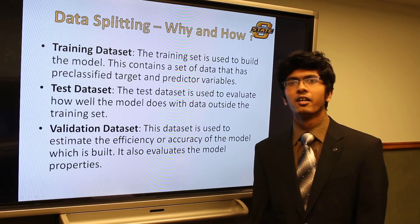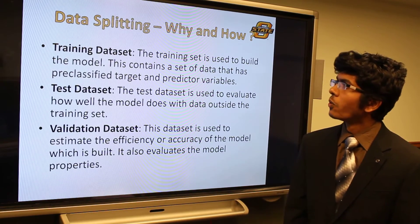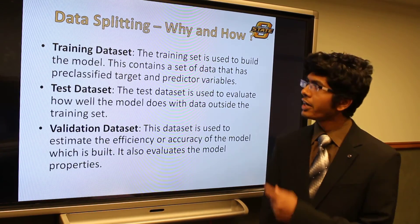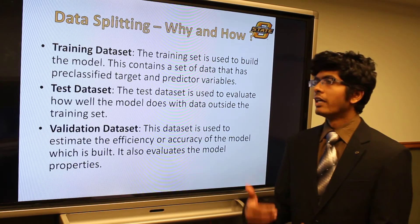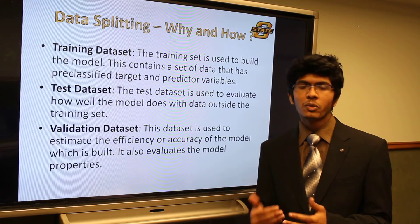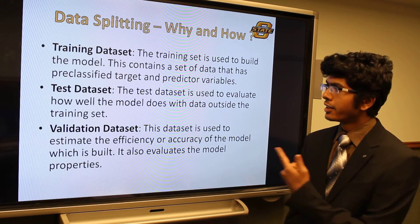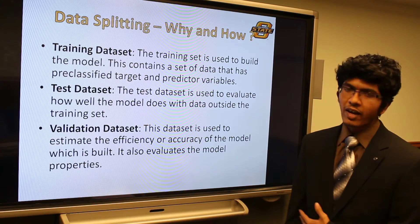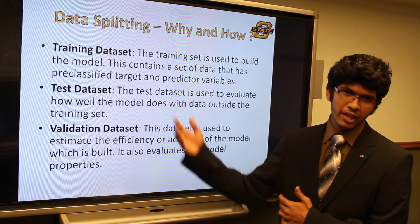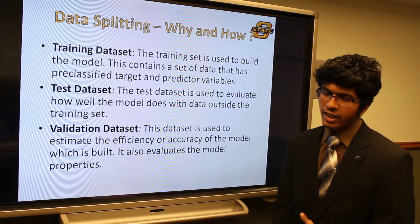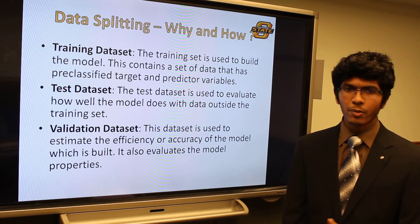The first process in model building is data splitting. We partition the data into three datasets: the training dataset, test dataset, and validation dataset. The training dataset is a subset of the data used to build the model and contains the pre-classified target and predictor variables. The test data is used to evaluate the model that has been built, using data that falls outside the training dataset. The validation dataset is used to evaluate the accuracy or efficiency of the model built and also evaluates the properties of the model.